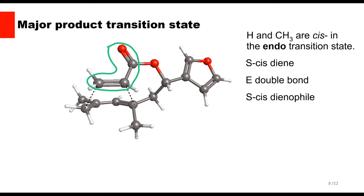And lastly, a vast amount of experiment has shown that endo transition states, where the carbonyl of the dienophile lies on top of the diene, are preferred over exo transition states.